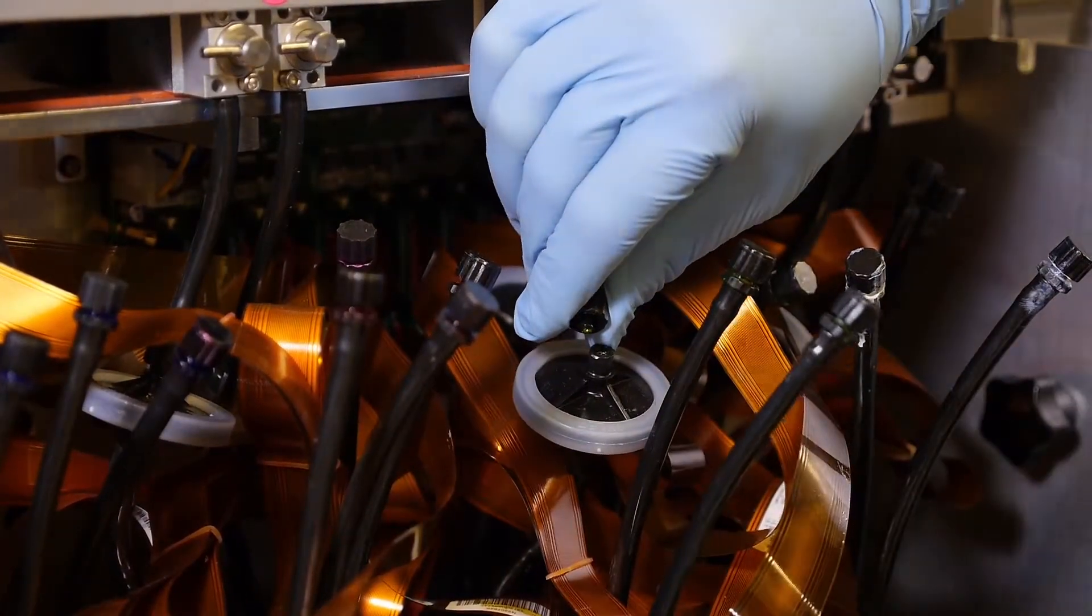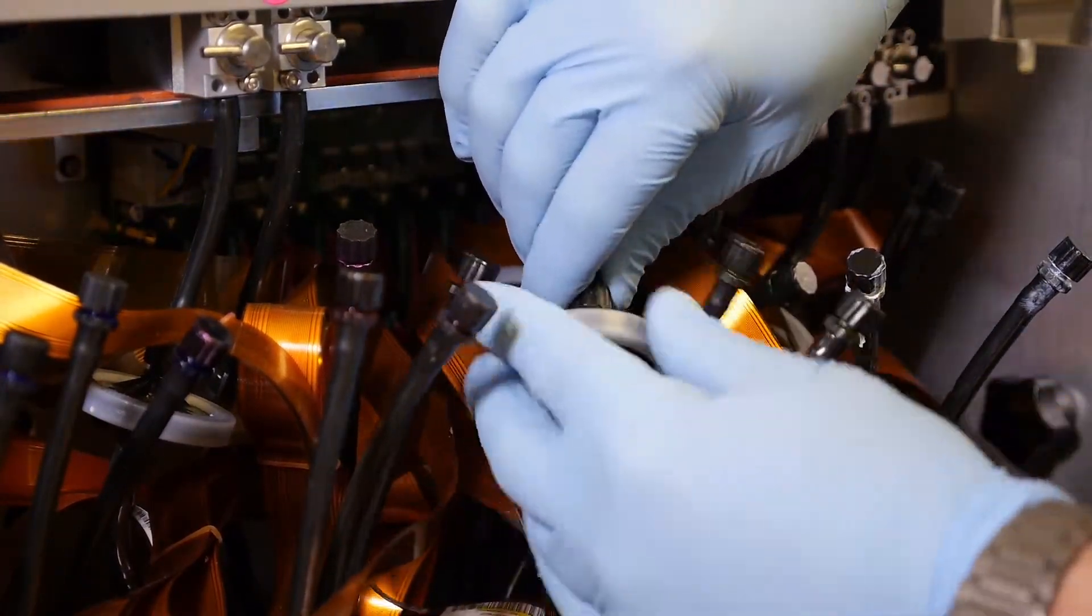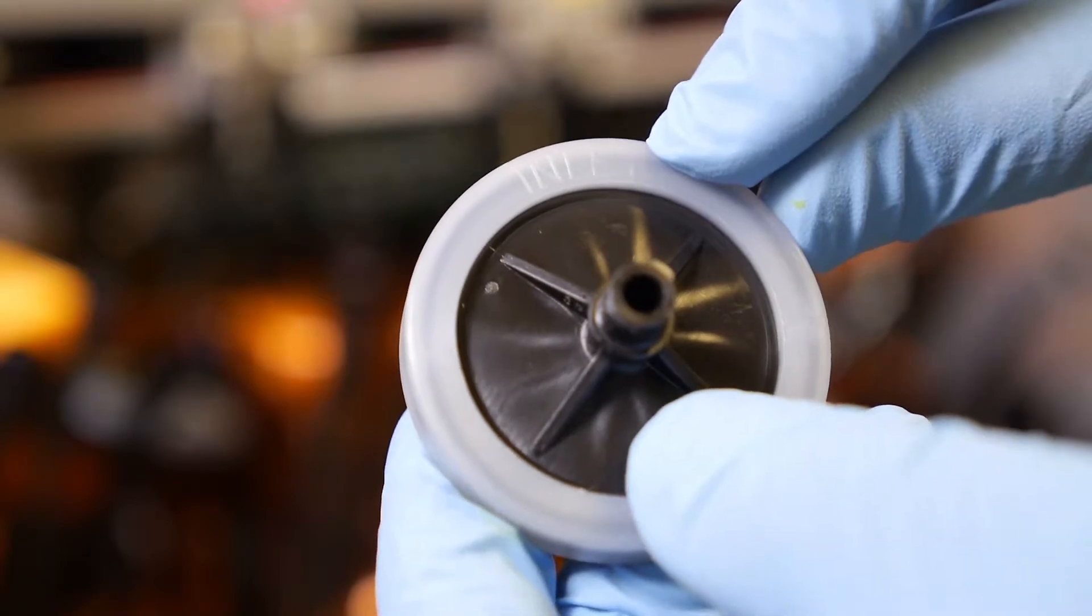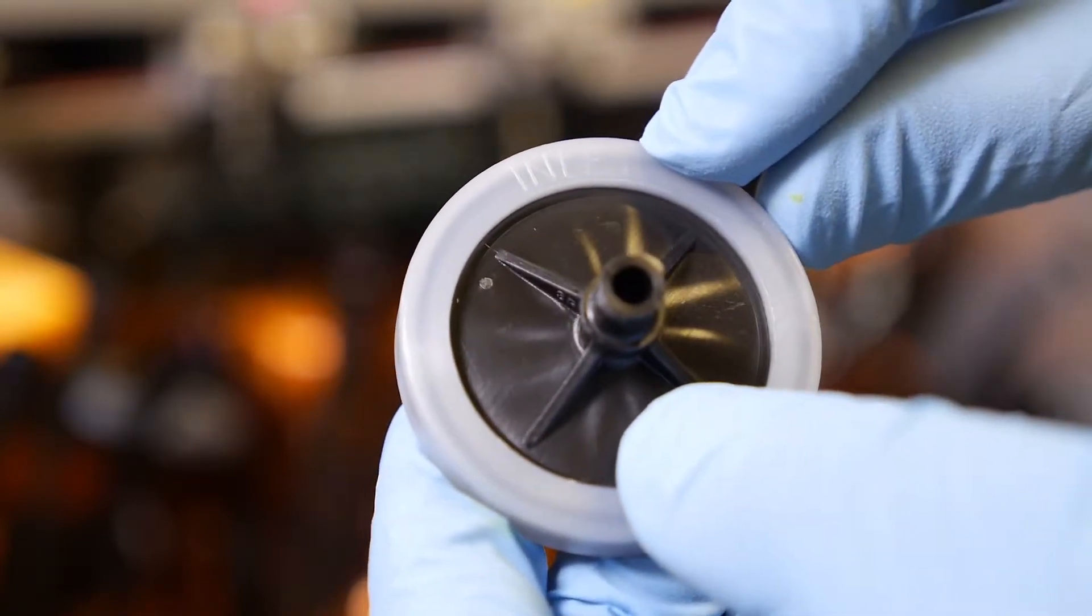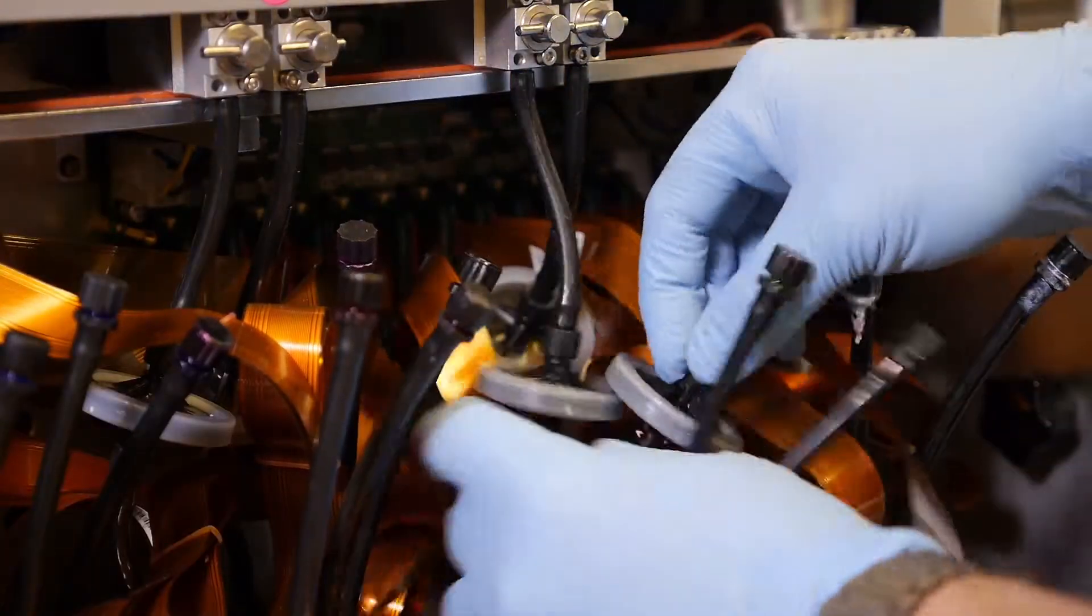Install the new secondary filter. Make sure the side with the inlet label is facing up. Screw the new filter in securely.